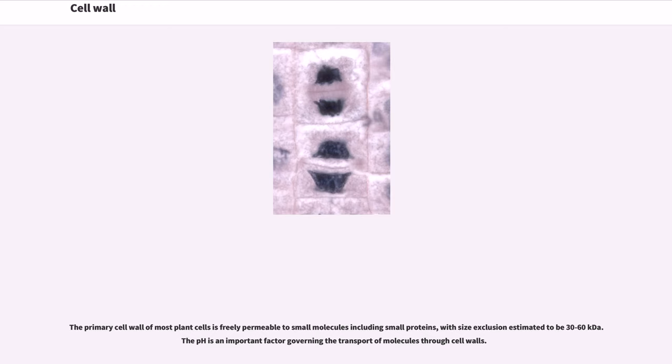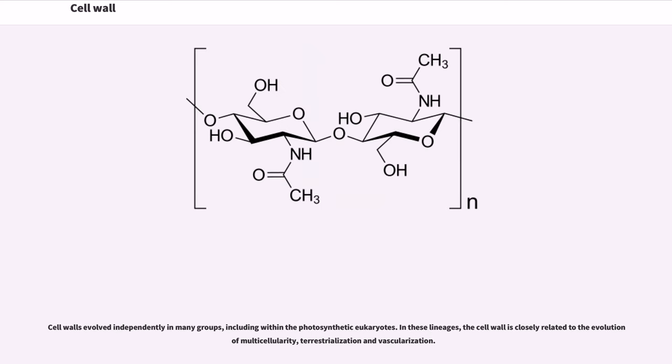The primary cell wall of most plant cells is freely permeable to small molecules including small proteins, with size exclusion estimated to be 30 to 60 kilodaltons. The pH is an important factor governing the transport of molecules through cell walls.